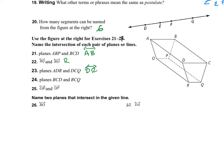Plane BCD and plane BCQ intersect on line BC. Line OP and line QP share point P, so they intersect at point P. Now I want to name the planes that intersect on line RO. Line RO intersects the plane on the bottom and the plane on the right, so those are plane ADR and plane ORQ.